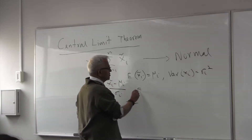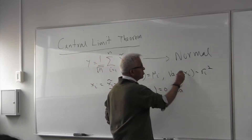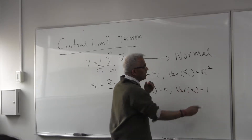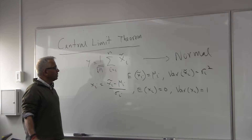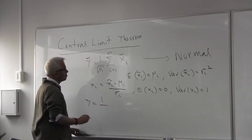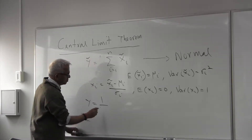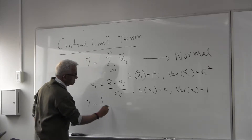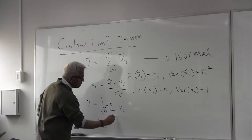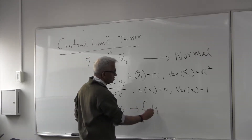So what I have done is just normalize this random variable. The mean is zero and the variance is one. I will call this y tilde, which is just the sum. Here I am going to look at a scaled version of xi. The question is: what is the density function of y?